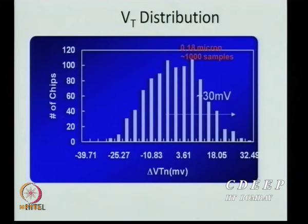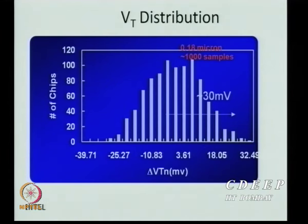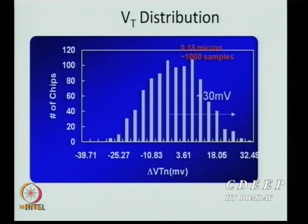For a 0.18-micron process, measurements on 1000 samples showed a threshold voltage shift of 30 mV. At 0.8V supply, this represents ~10% variation — 60 to 100 mV — meaning chips work at different speeds, different power dissipation, and sometimes logic fails or analog gains are not obtained. Designers must account for process variation in their designs.